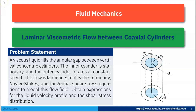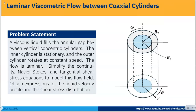Today I will talk about laminar viscometric flow between coaxial cylinders. A viscous liquid fills the annular gap between vertical concentric cylinders. The inner cylinder is stationary, and the outer cylinder rotates at constant angular speed omega.